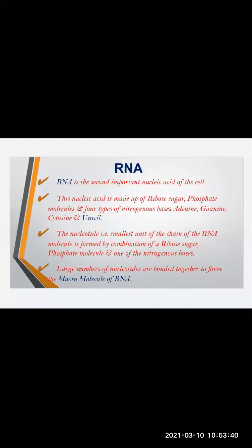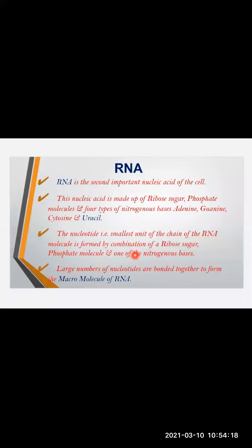RNA is the second important nucleic acid of the cell. This nucleic acid is made up of ribosugar, phosphate molecules, and four types of nitrogenous bases. The nitrogenous bases in RNA are adenine, guanine, cytosine, and uracil. The nucleotide, which is the smallest unit of the RNA chain, is formed by the combination of ribosugar, phosphate molecule, and one of the nitrogenous bases.